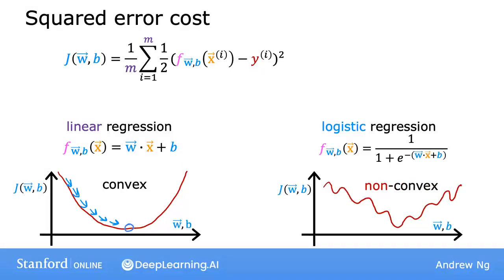This becomes what's called a non-convex cost function. It's not convex. And what this means is that if you were to try to use gradient descent, there are lots of local minima that you can get stuck in. So it turns out that for logistic regression, this squared error cost function is not a good choice. Instead, there will be a different cost function that can make the cost function convex again. So the gradient descent can be guaranteed to converge to the global minimum.